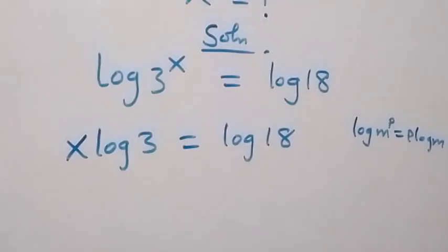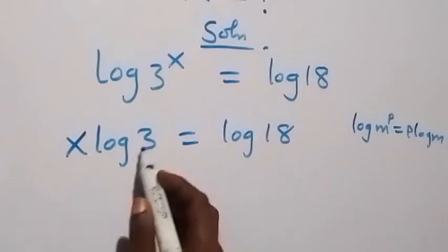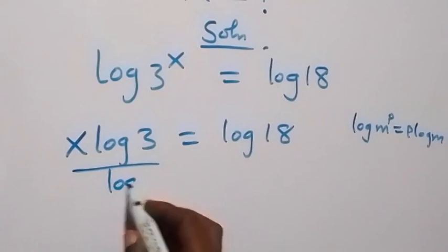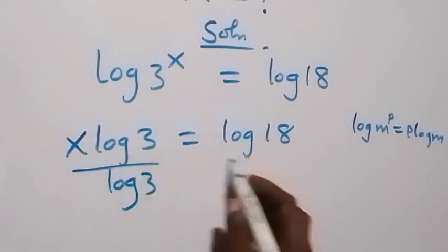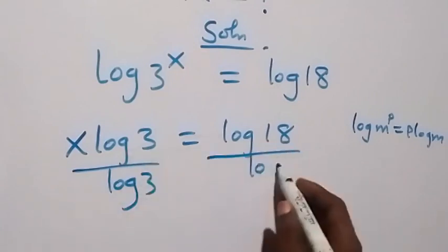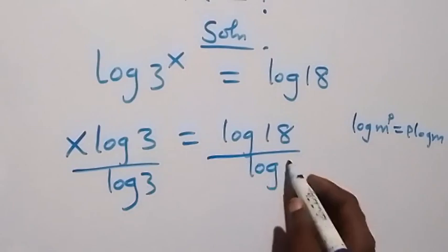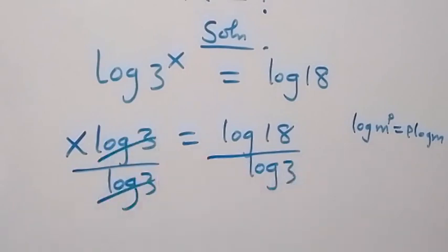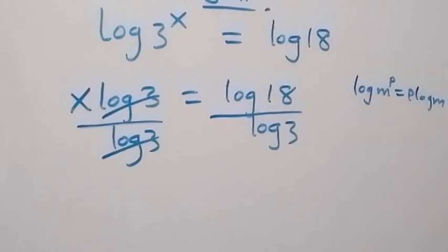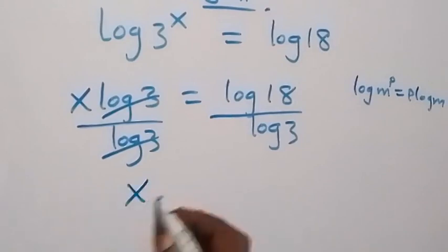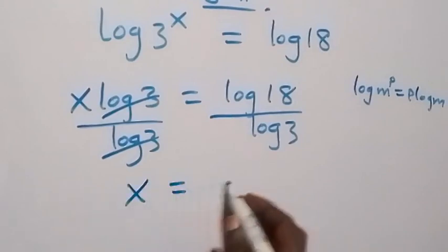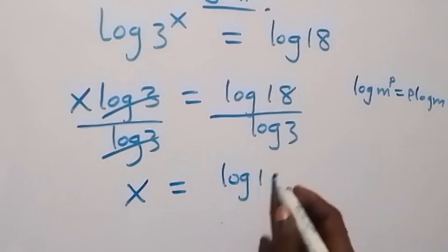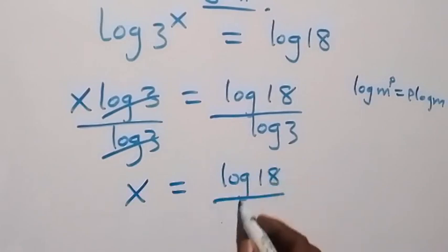Then from here, we can divide both sides by log 3 so as to get rid of log 3 here. We also divide this side by log 3 and log 3 will cancel out here. So we have x left, which is equal to log 18 over log 3.